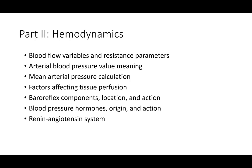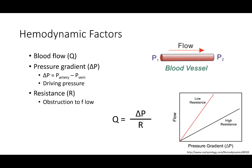Hemodynamics — the factors of blood flow. Blood flow is determined by the driving pressure pushing blood through a tube divided by the resistance opposing it. Flow is essentially the determinant of how hard we're pushing versus what's in the way.